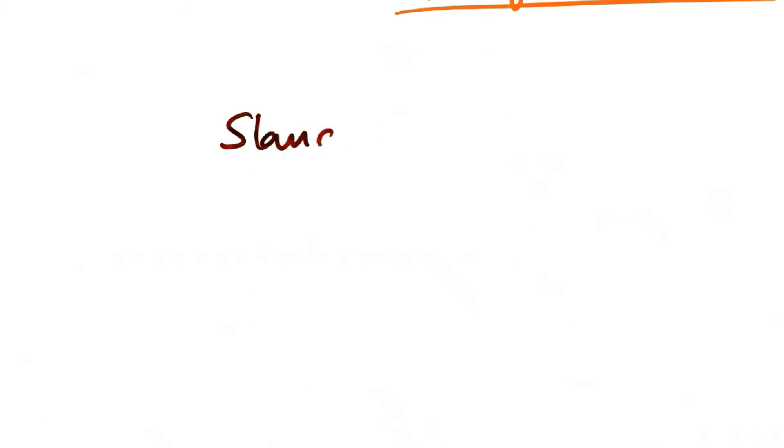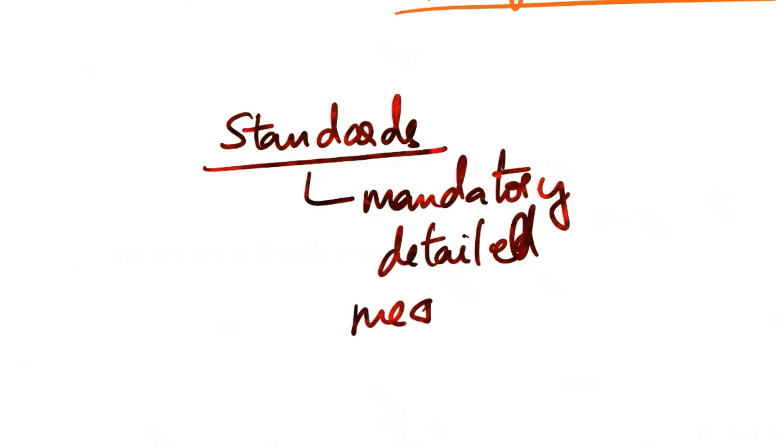Now, let's talk about standards. Security standards are mandatory, detailed, and measurable requirements that support policy goals. They ensure uniform implementation across the organization, specifying how hardware, software, and user behavior should comply. They are tactical documents that provide a strategic framework for the uniform implementation of technology and procedures across the organization. They define specific expectations and behaviors, ensuring compliance with policy goals. Organizational standards may cover hardware and software usage, user behavior, and more, enforcing uniformity across the organization.